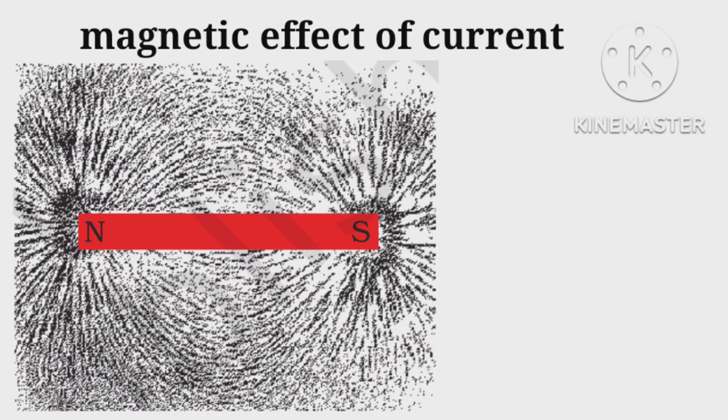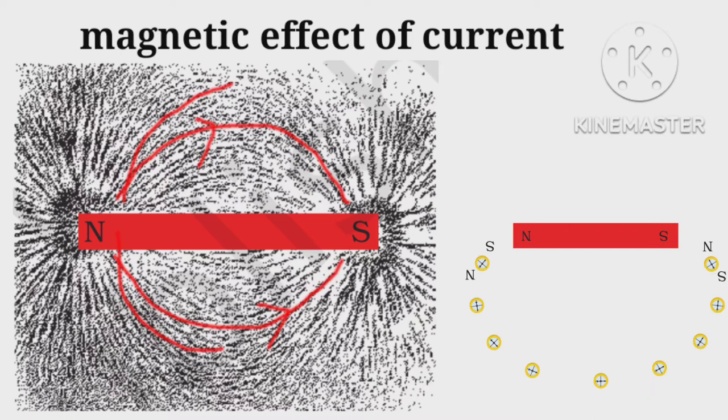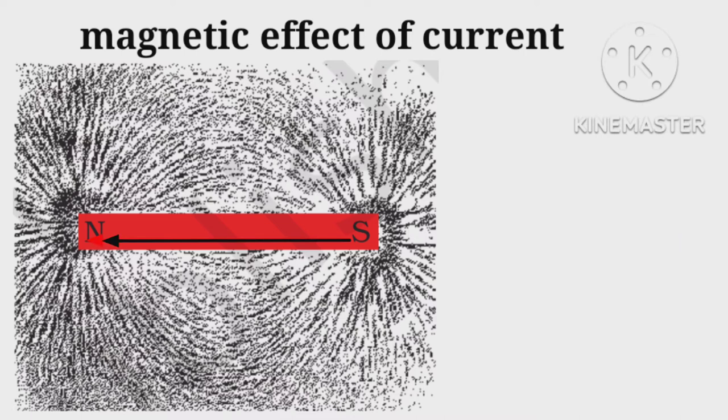Let us take a white paper, put a bar magnet over it, and spread some iron filings around it. What we see is iron filings aligned as if moving from north to south pole of magnet outside and south to north inside, thus completing a closed loop. So we say a magnetic field is created surrounding the bar magnet.